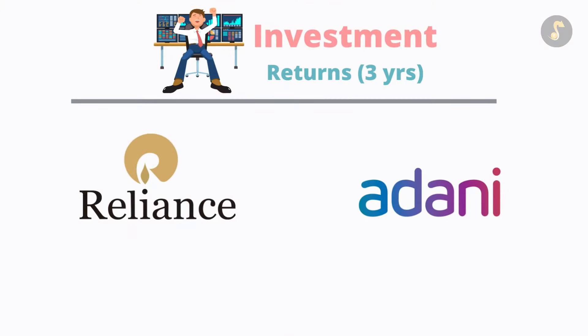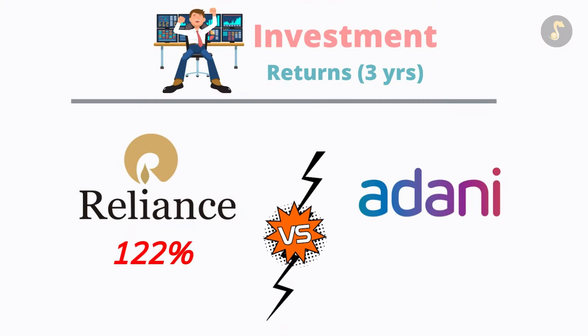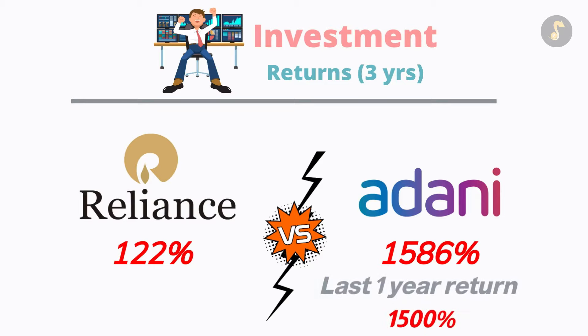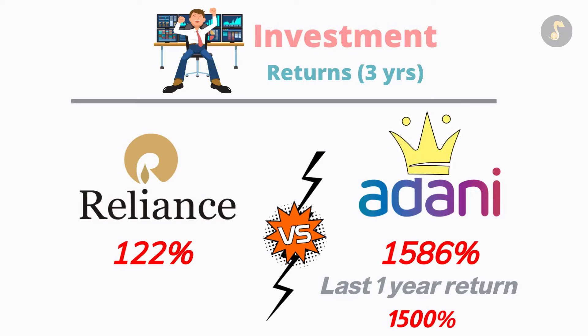Now let's see ki in douno stocks ne investors ko last three years mein kitna returns diya hai. Reliance ne pichle teen saal mein investors ko 122% ka return diya hai, vahhi Adani Enterprises ne investors ko 1,586% ka return diya hai. And the point to note is that around 1,500% of that return was given in the last ek saal mein.